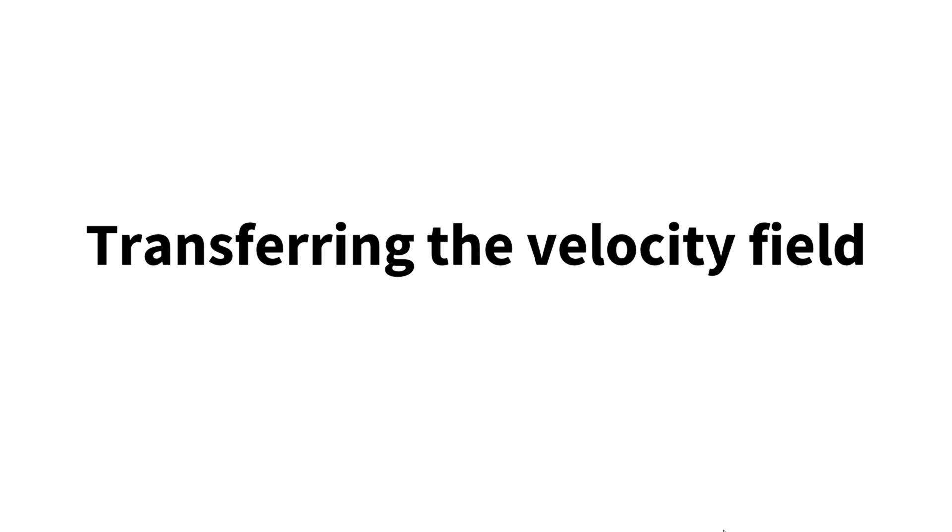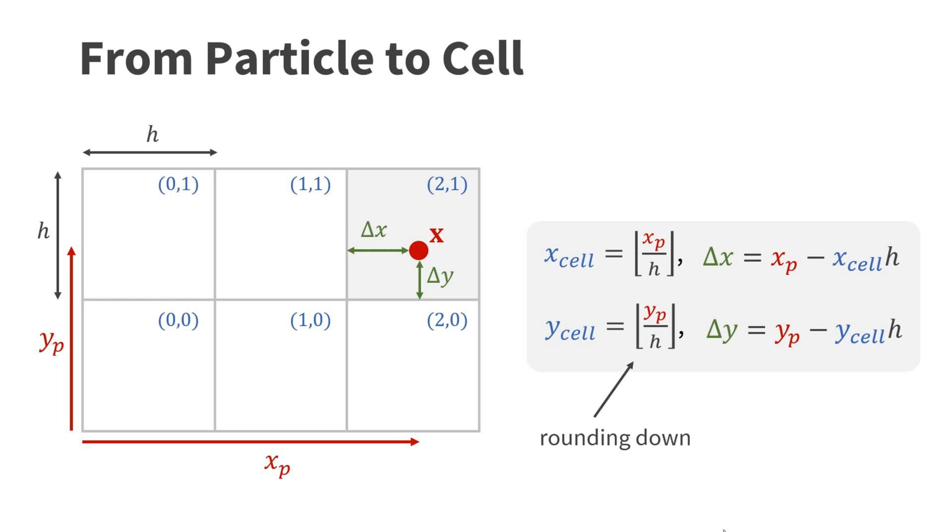Transferring the velocities between the grid and the particles is a little bit technical. It's pretty simple to implement, though, as you can see in the code. In this example, we have a particle at the position X with coordinates XP and YP. First, we need to find the cell that contains P. The cells are labeled with two integer values, Xcell and Ycell. We find the cell coordinates by dividing the particle coordinates by the spacing H and round down. In our example, if we divide XP by H and round down, we get two. If we divide YP by H and round down, we get one. Two and one are the coordinates of the cell that contains P. We call the remainders of the division delta X and delta Y.